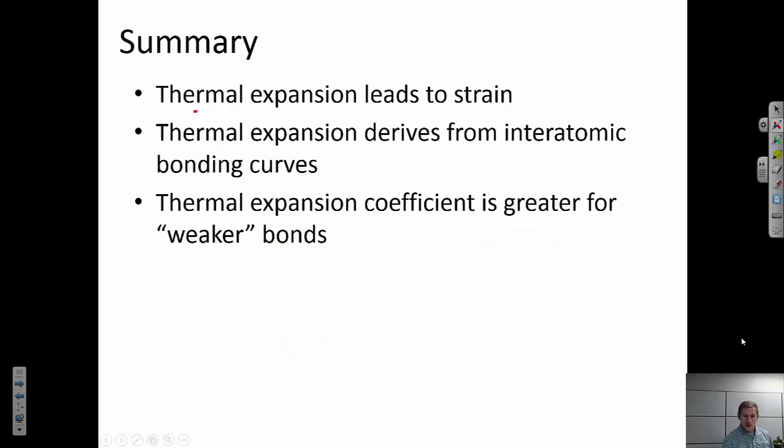Okay, in review, thermal expansion leads to a strain, a thermal strain. If a piece is confined, that could create a stress on the piece. And that could ultimately lead the piece to fail or it could lead it to buckle like that image of the railroad ties we saw at the beginning. Thermal expansion ultimately is going to derive from this interatomic bonding. That's the atomic origin of the thermal expansion coefficient. And finally, the thermal expansion coefficient is going to be greater for weaker bonds. So the weaker the bond, typically the larger the expansion I would expect to see resulting from a small change in temperature.